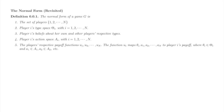The normal form of a static game of incomplete information is the set of players, each player's type space, each player's beliefs about her own and other players' types, each player's action space, and each player's payoff function. Incomplete information enters the game through the types and beliefs.